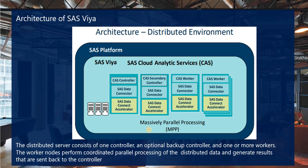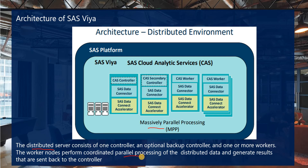The distributed architecture uses MPP — massively parallel processing. We have data controllers and workers. The data controller is a distributed server that consists of one controller and an optional backup controller. One or more workers perform parallel processing of distributed data, generate results, and send them back to the controller.